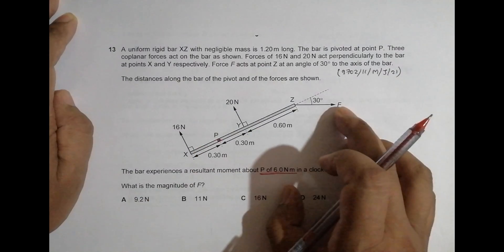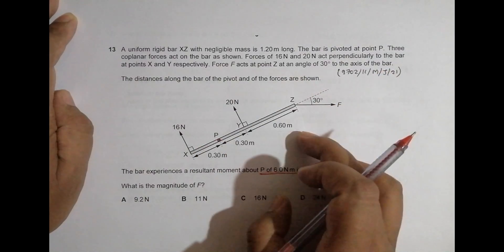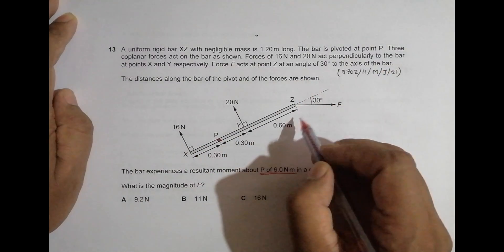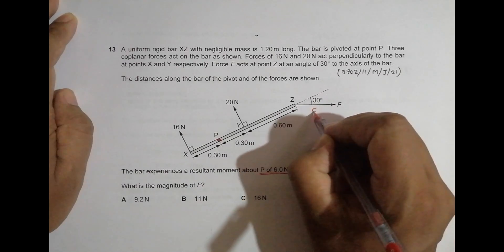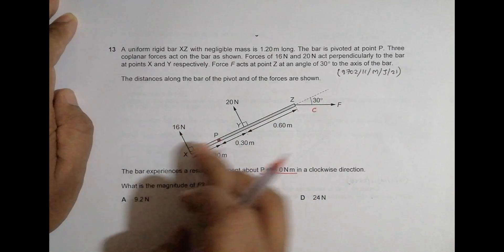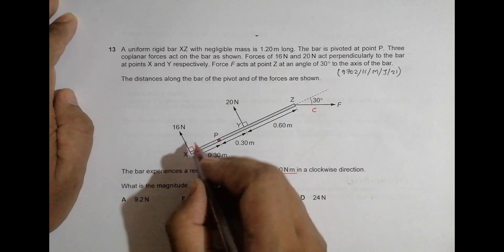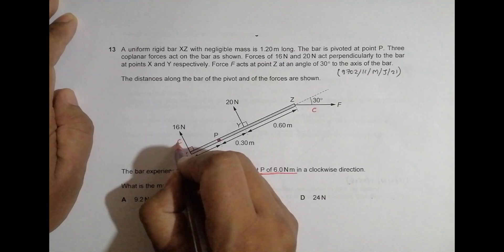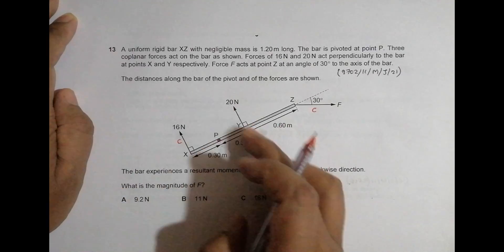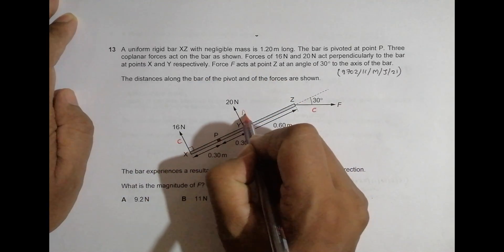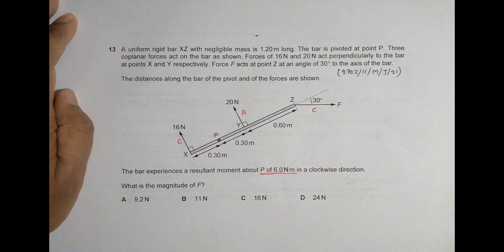So this is clockwise. Again, this is pivot, the force is like this, so if this is pivot and force like this, it will try to move this in the clockwise, so this is also clockwise. Now pivot and force here, so this is anti-clockwise. So that means two clockwise and one anti-clockwise.